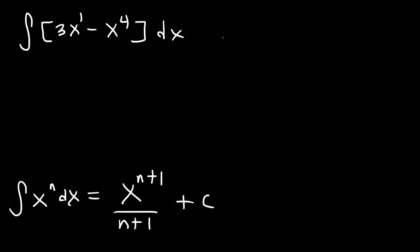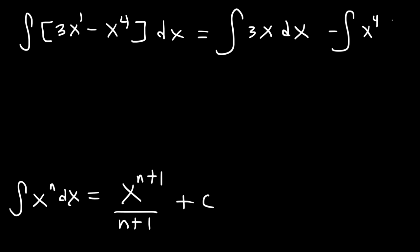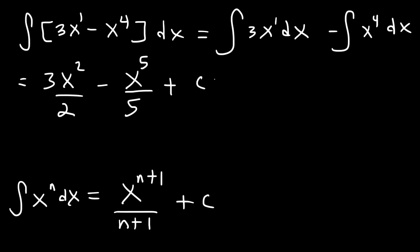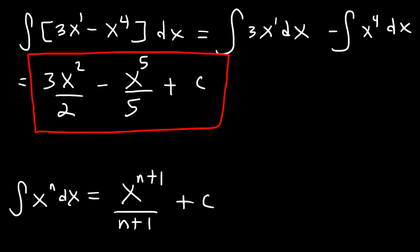So this is 3x to the first power. You could separate it into two separate integrals if you want to. The antiderivative of x is x squared divided by 2, multiplied by 3. And for x to the 4th, it's going to be x to the 5th over 5 plus some constant c. And that's it for the first example.